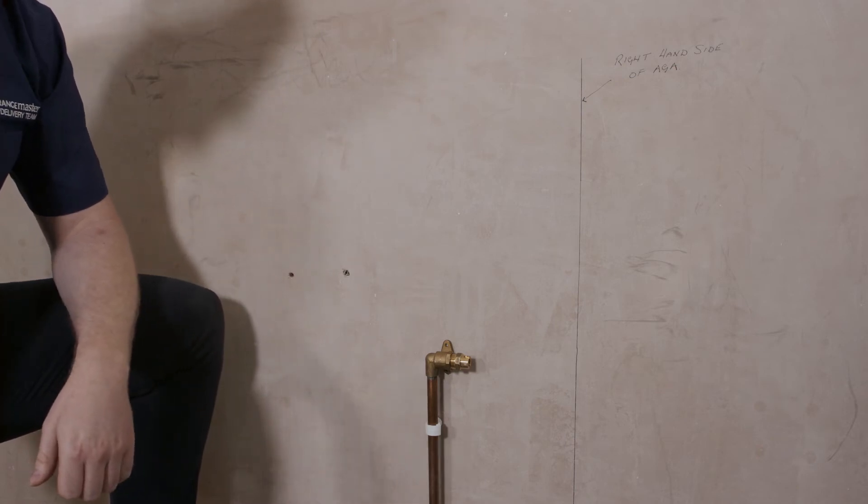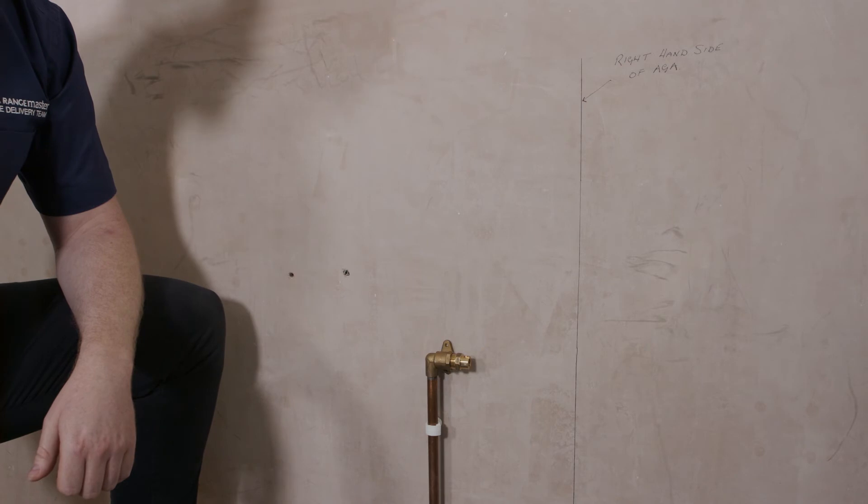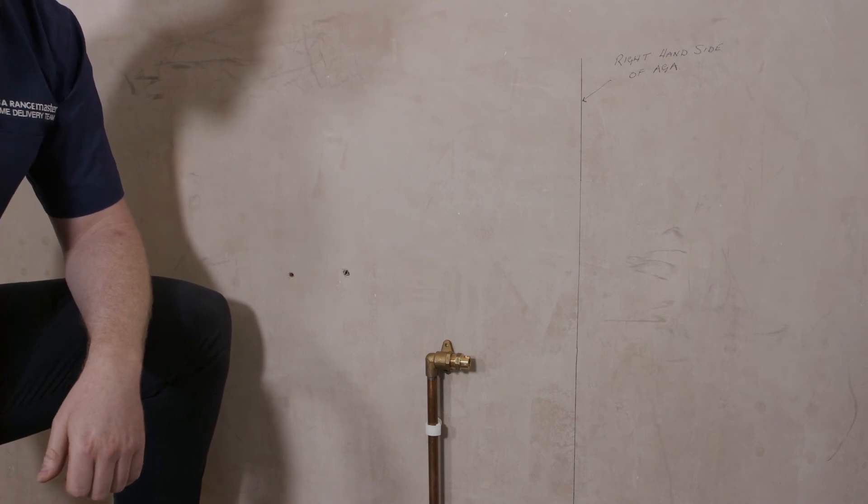Further details on where the gas connection should be sited can be found in your installation guide. We recommend that you avoid forward facing micro point bayonets as this may not allow the cooker to sit against the rear wall. Additionally should any alterations be necessary to an existing gas connection point you need to seek the services of a gas safe registered engineer.